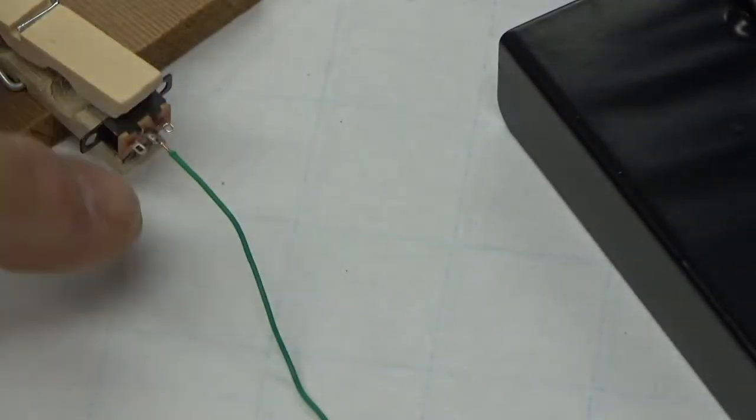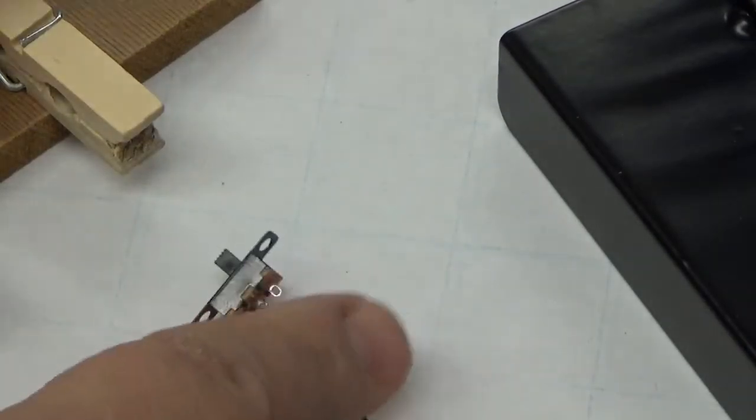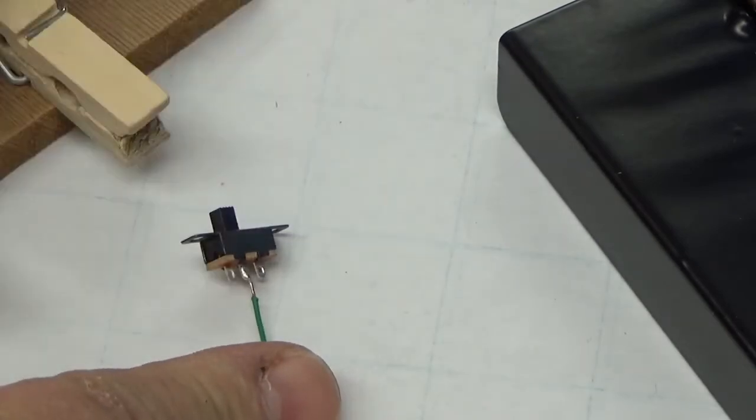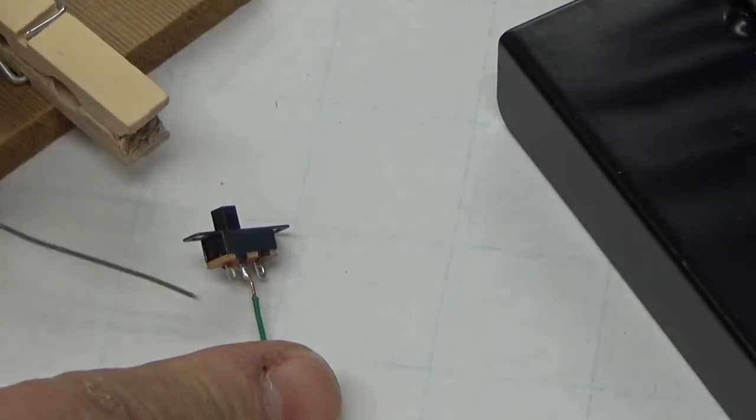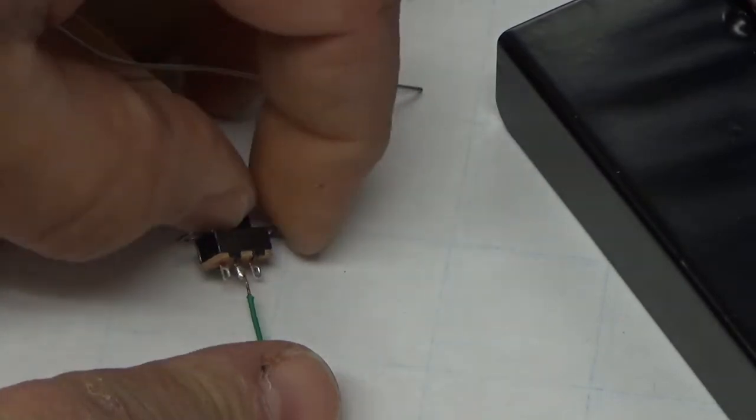Now you always go to the center leg of a switch because that's the common one. So when I take this out now, when I flip the switch and I go the other way, it means that this leg on the far side of the middle one would be connected. If I switch the opposite direction,